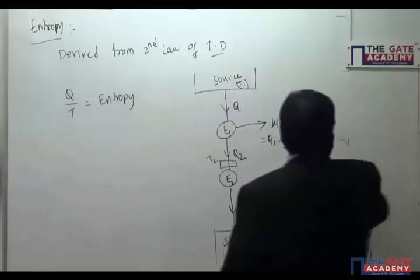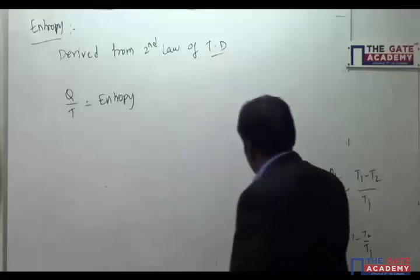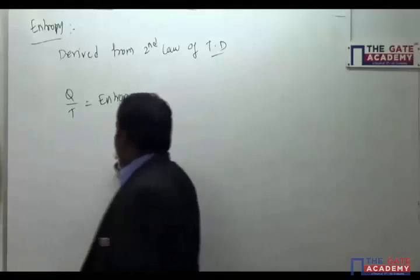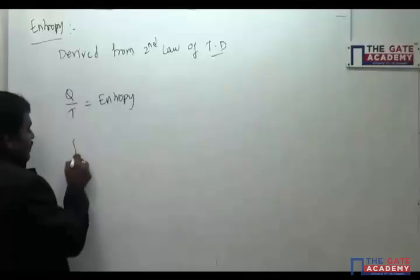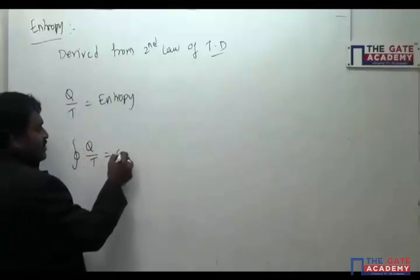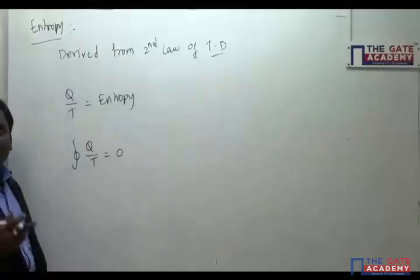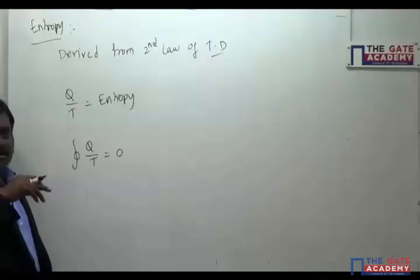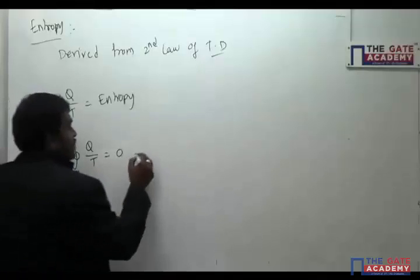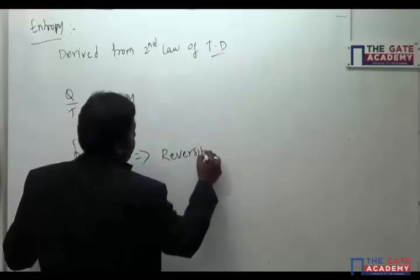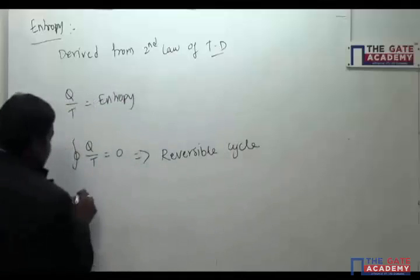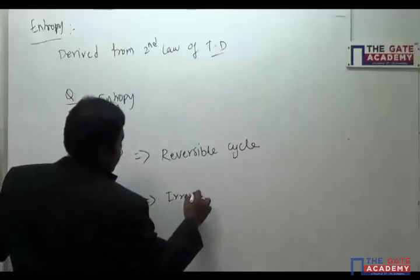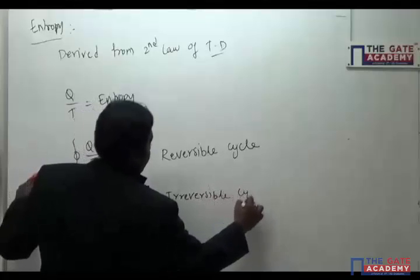Q/T is called entropy. If the cyclic integral of Q/T equals zero, it is a reversible cycle. If the cyclic integral of Q/T is less than zero, it is an irreversible cycle.